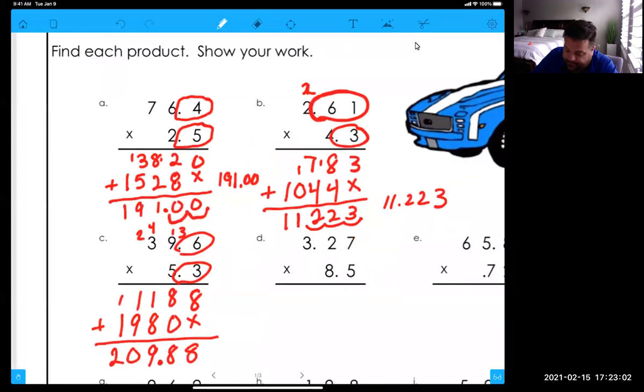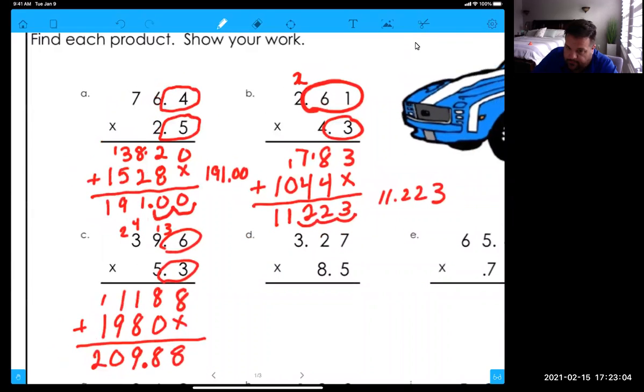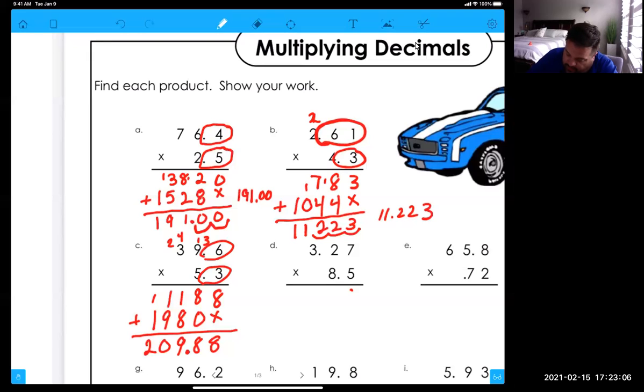Do d. All right. Thirty-five, carry the three. Thirteen, carry the one. Fifteen, sixteen. Placeholder. Fifty-six, carry the five. Sixteen, twenty-one, carry the two. Twenty-four, twenty-five, twenty-six. Add it all up.